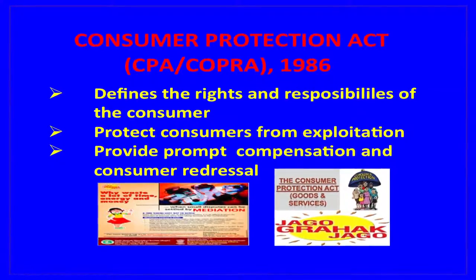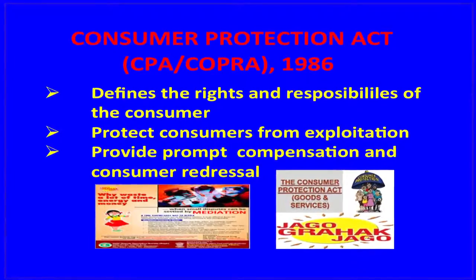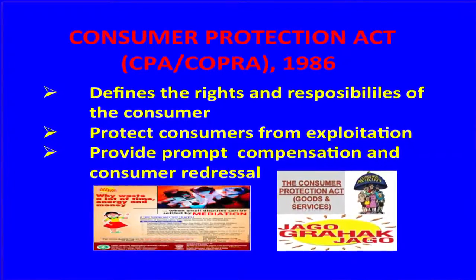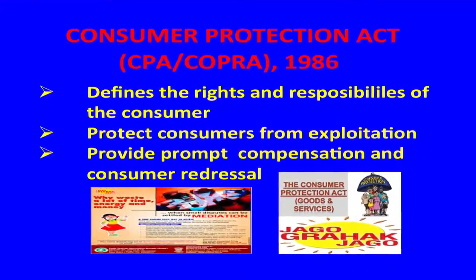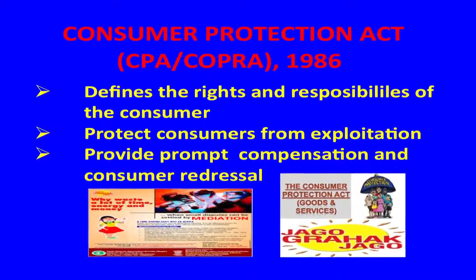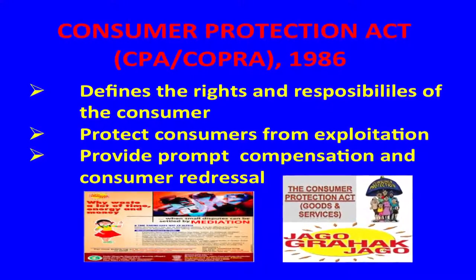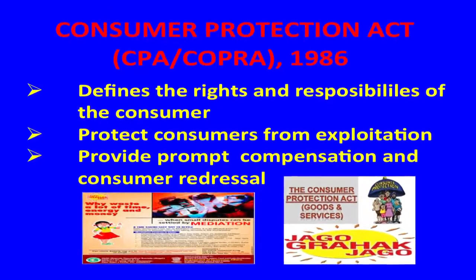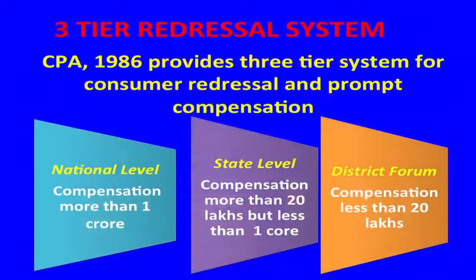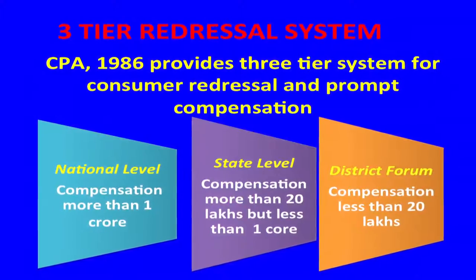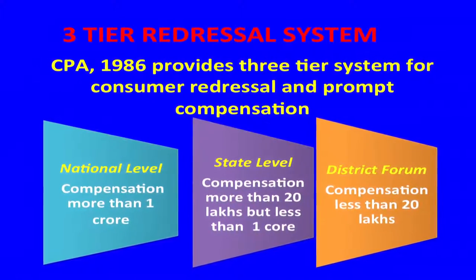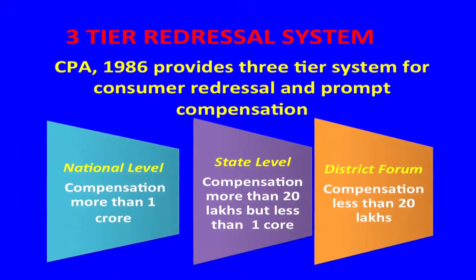COPRA 1986 — COPRA is the Consumer Protection Act, enacted in 1986 to protect consumers against unfair trade practices. Consumer Forums and Councils for the settlement of consumer disputes are established under this Act. It also provides prompt compensation and consumer redressal. COPRA contains a three-tiered redressal mechanism: at the district forum, the state level, and the national level.